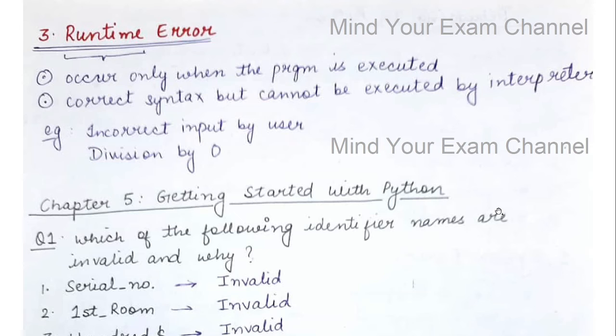Now coming to the next kind of error: runtime error. Runtime means the time of execution. These are errors that arise only when you execute your program. They will stop the execution of the program even if the syntax is correct, because there is some problem that the interpreter cannot execute.